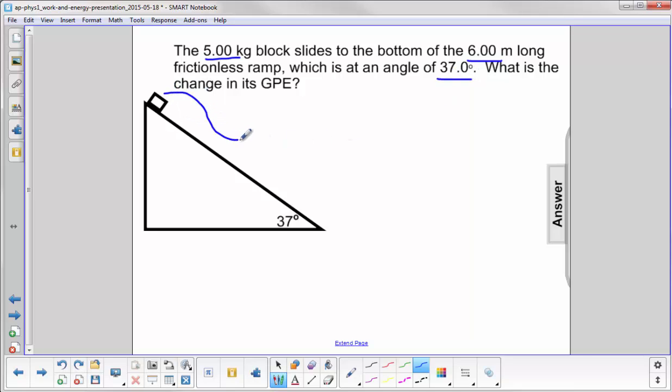So this distance here, which we've been calling d, that's 6 meters long. Here's our angle, 37 degrees.